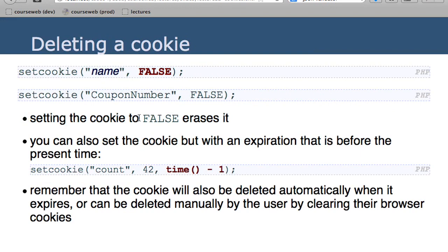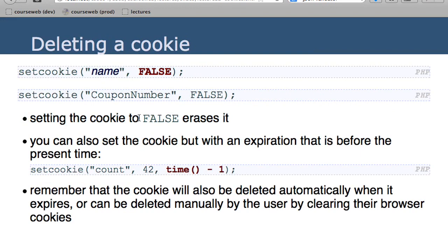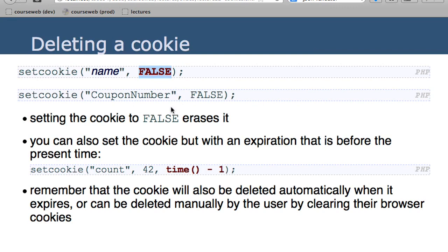If we want to delete a cookie, the best way is to set that cookie to false, or set it to expire at a very early time — just pass zero to make it expire on January 1st, 1970. That'll account for any time differences between the server and the browser.